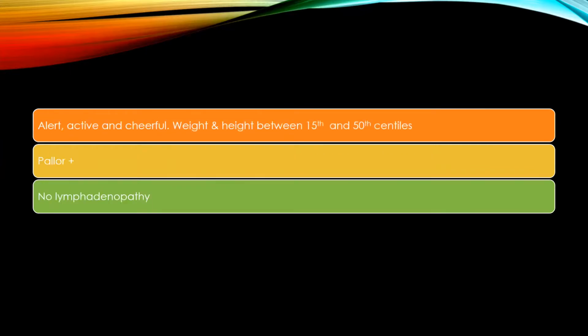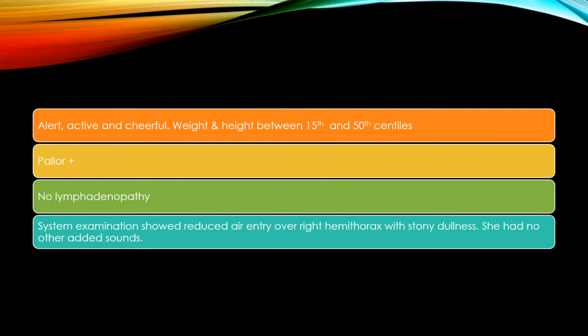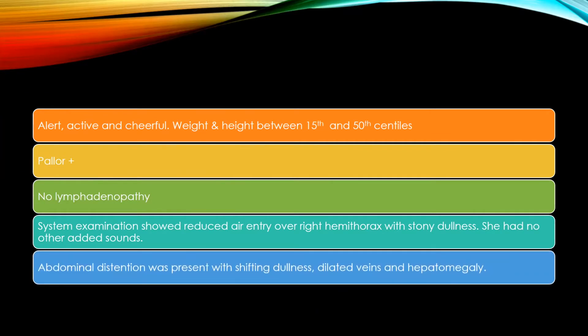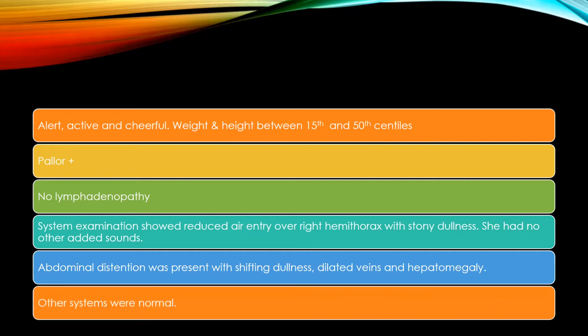On examination, she was alert and a very cheerful child. Her weight and height were between the 15th and 50th centiles. She had minimal pallor. There was no lymphadenopathy. Chest examination showed reduced air entry over the right hemithorax associated with stony dullness. Abdominal distension was present with shifting dullness, also associated with dilated veins and hepatomegaly. Other system examinations were essentially normal.